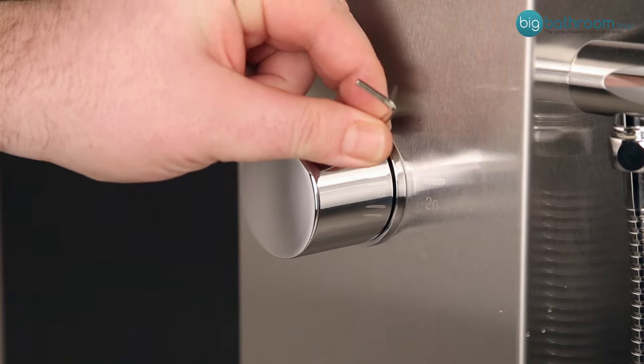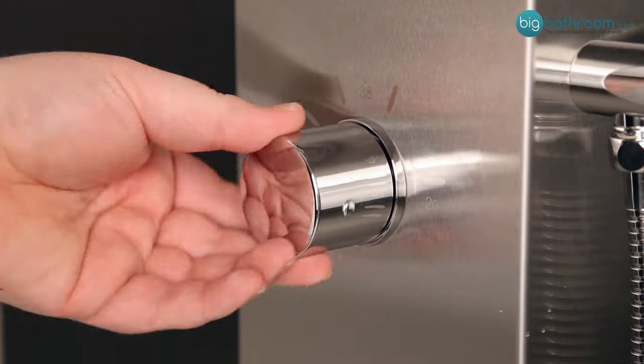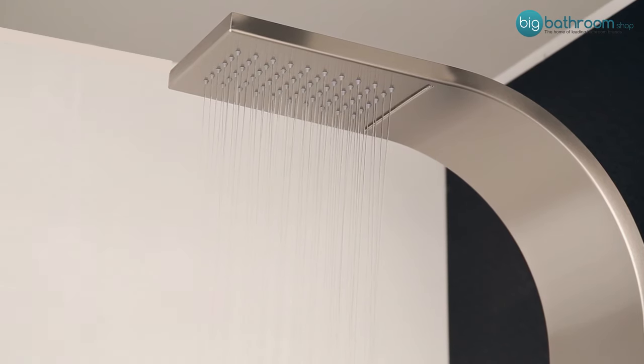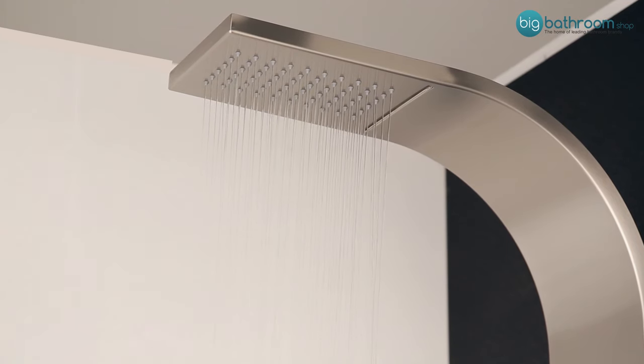Insert the grub screw and replace the plastic cap. Finally, test your shower to confirm the calibration has been successful.